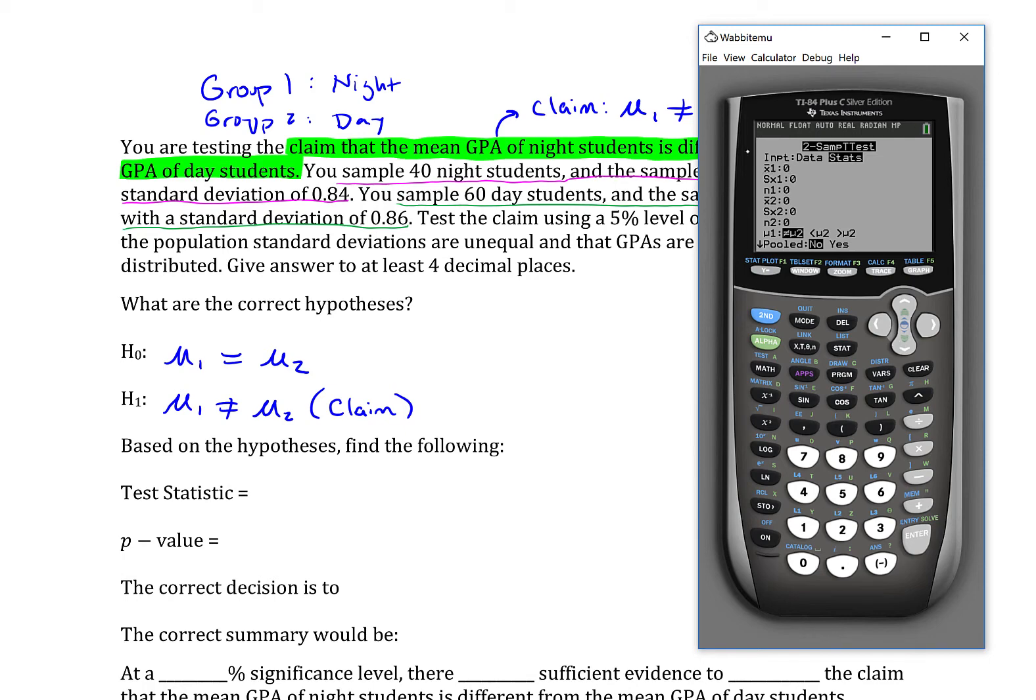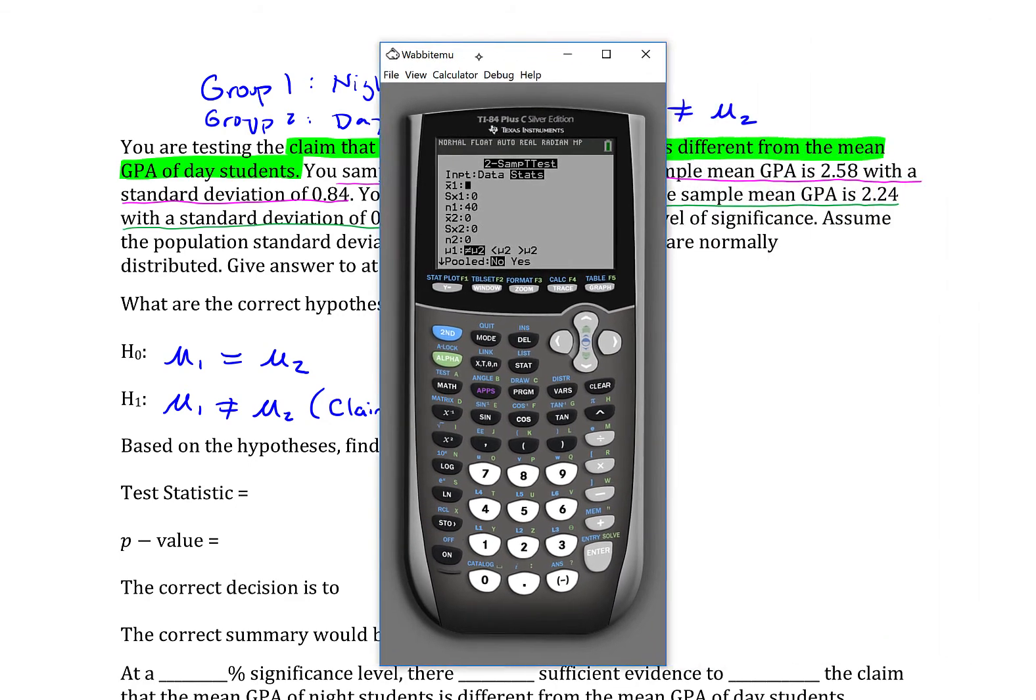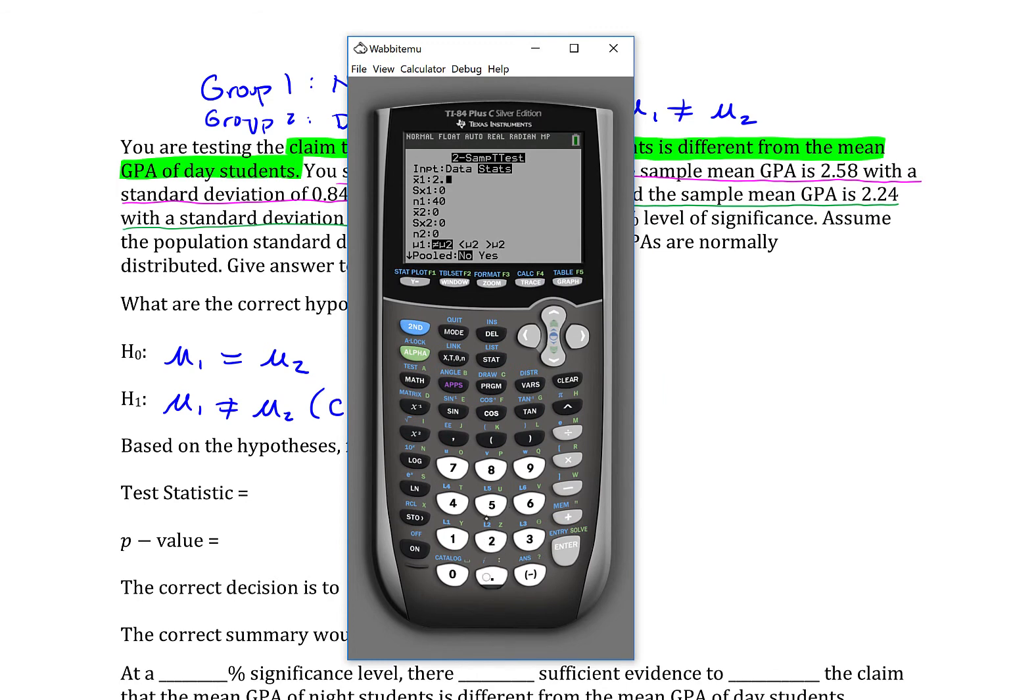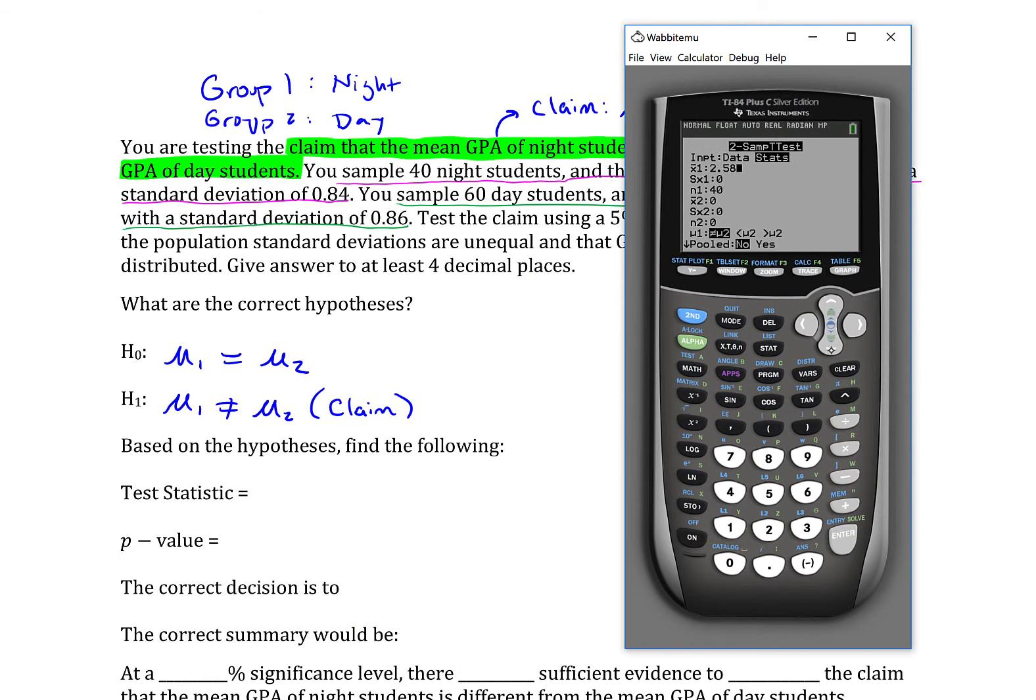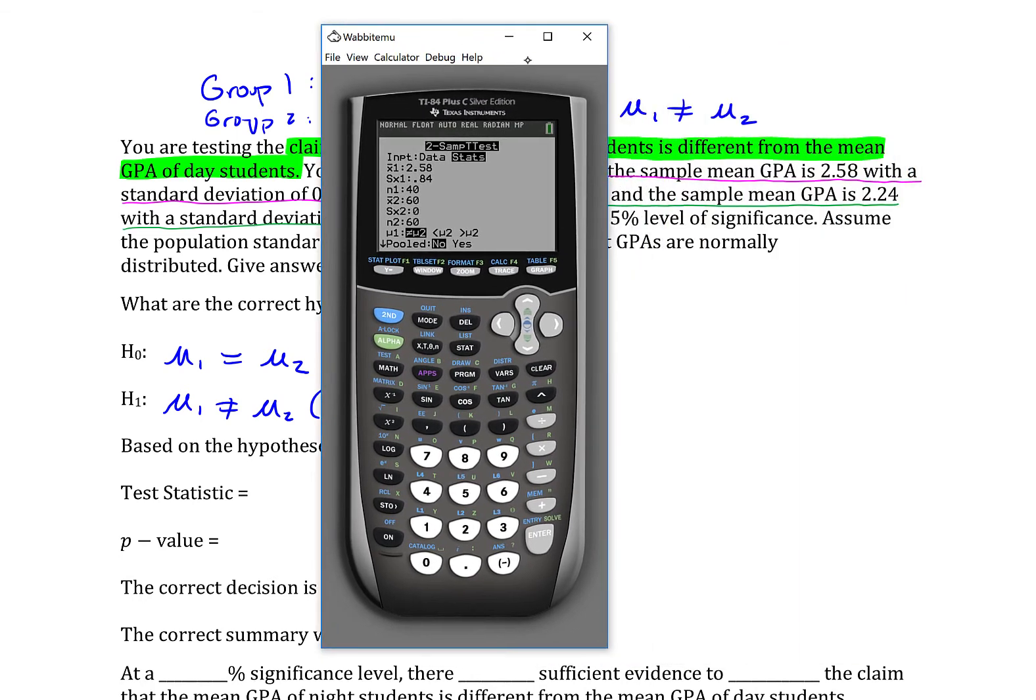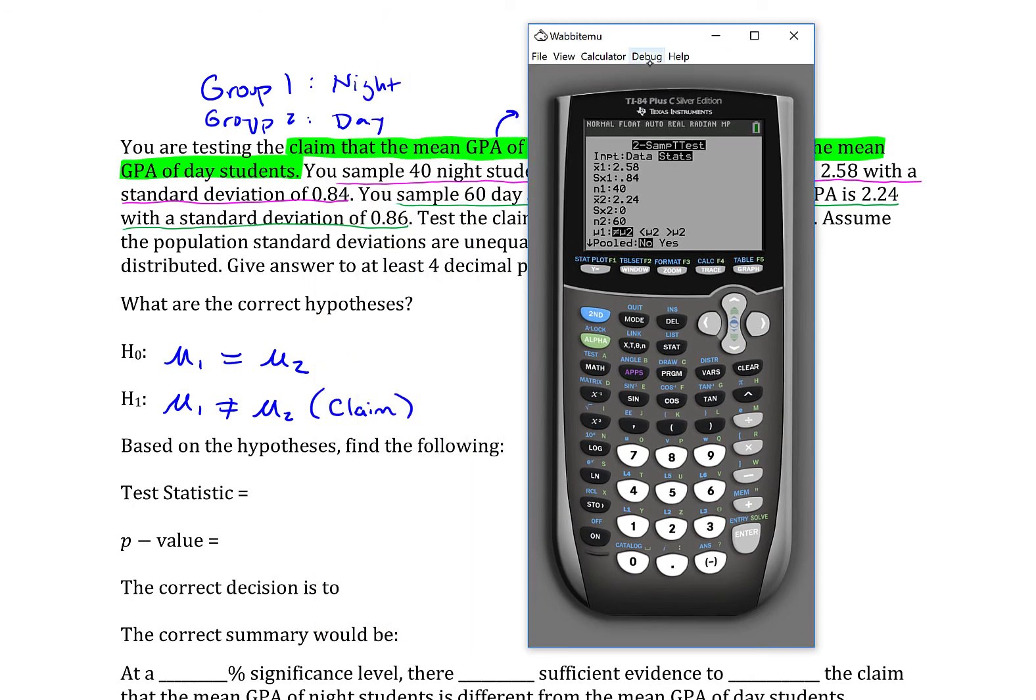Starting with sample one. Now, I called group one my night students. So I had 40 night students. I'm going to set n1 to 40. The sample mean of the night students was 2.58. And they had a standard deviation of 0.84. Now, group two is the day students. There was a sample of 60 day students. And of those 60 day students, they had a... Oh, I put that in the wrong place. So n is the 60. The mean is of 2.24. And the standard deviation is 0.86.